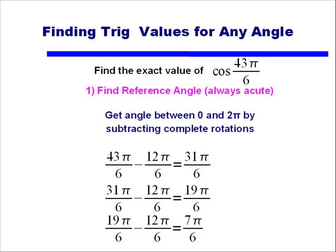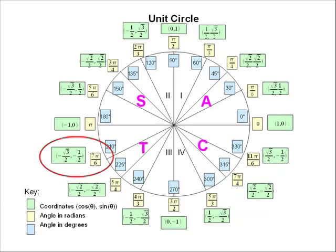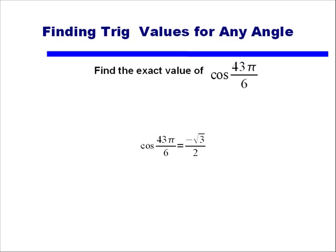We could go ahead and find the reference angle, or if you memorize your unit circle and sketch it out at the beginning of each exam, then when you get to a question like cosine of 43π/6, once you reduce the angle to 7π/6, all you have to do is look at your unit circle, find 7π/6, and since cosine is the x-term, the value is negative √3/2. So the cosine of 43π/6 equals negative √3/2.